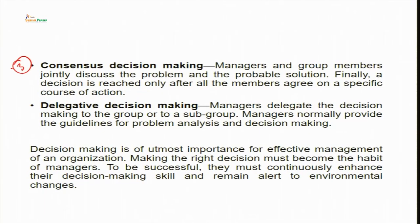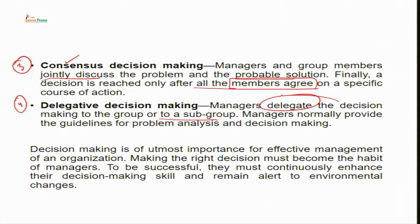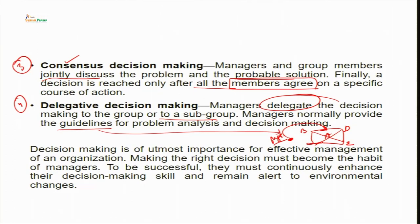The third type is consensus decision making, where the manager and group members jointly discuss and reach a probable solution, but a final decision is reached only after all members agree on a specific course of action. The fourth is delegative decision making, where the manager delegates the decision making to the group or subgroup. The manager provides guidelines for problem analysis and decision making but is generally away from the people making the decisions — giving the task and guidelines but not participating in the actual decision making.